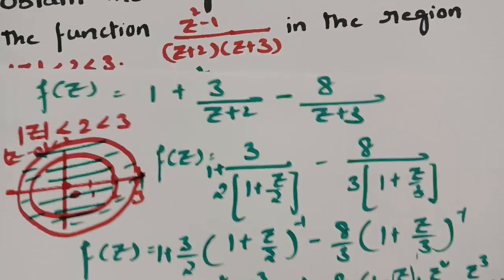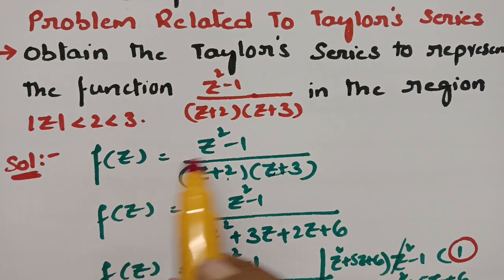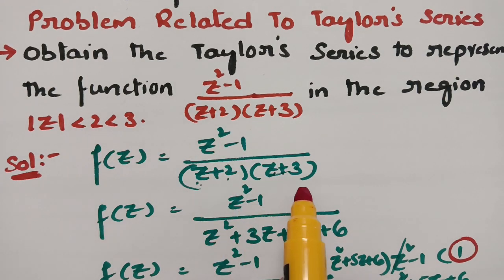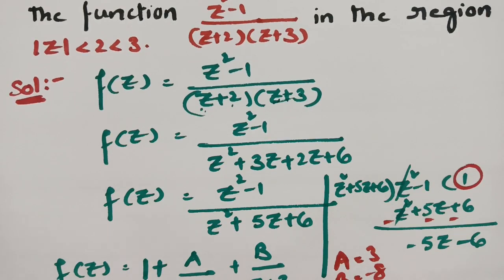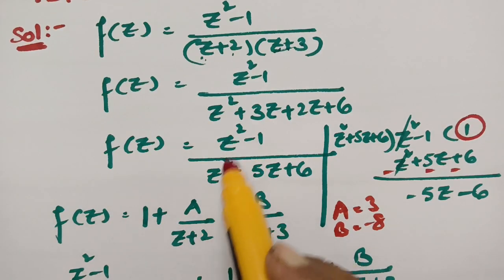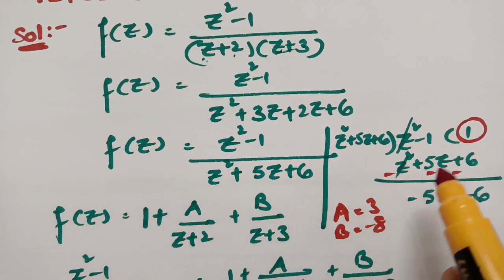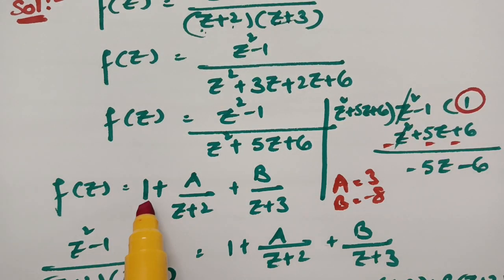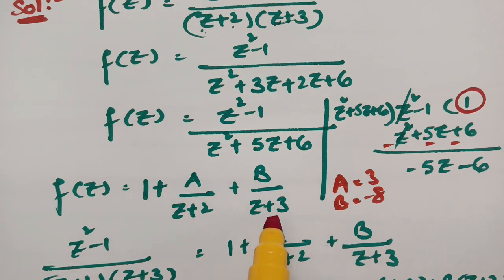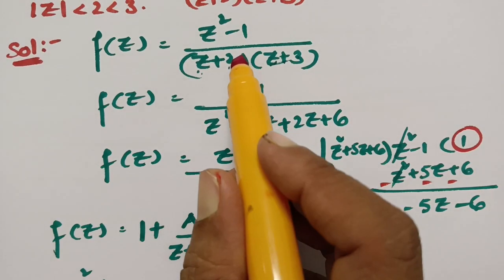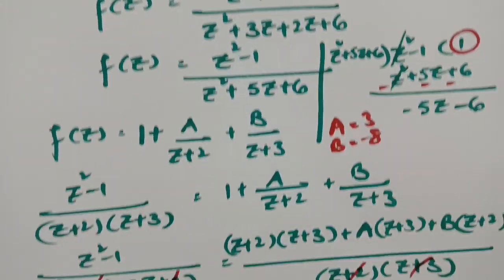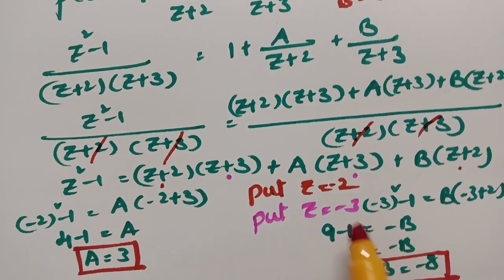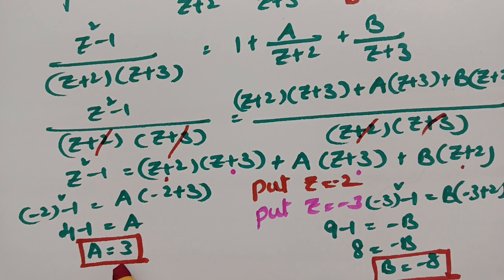To summarize: f(z) = (z²-1)/((z+2)(z+3)). After multiplying, the degrees are equal, so we divide to get quotient 1, then resolve into partial fractions. Substituting z = -2 gives A = 3, and substituting z = -3 gives B = -8.